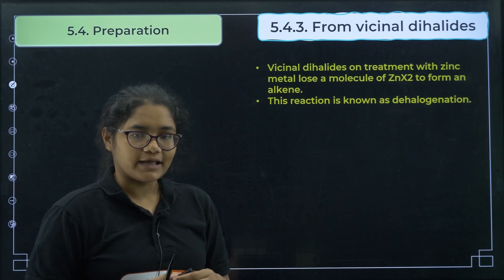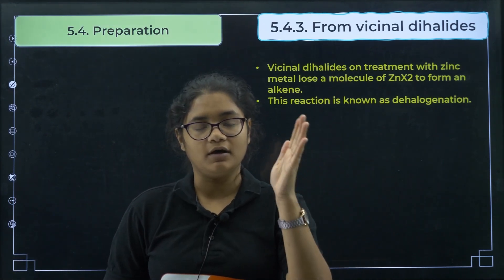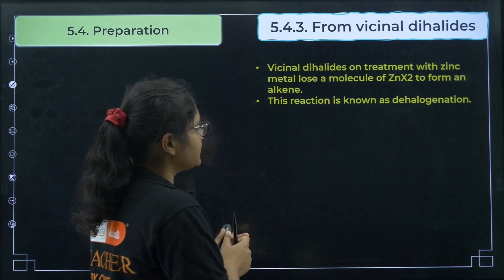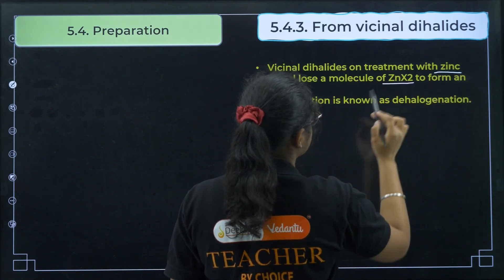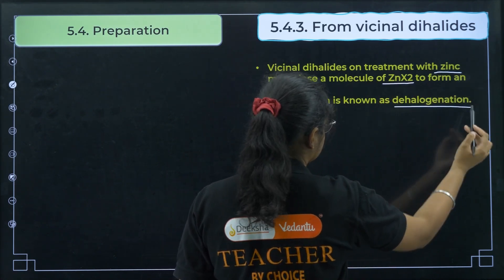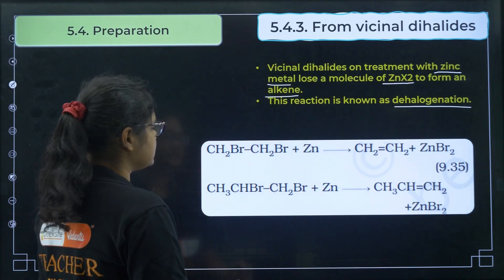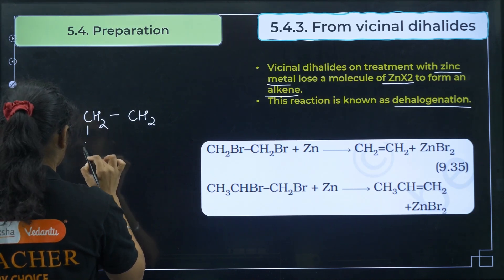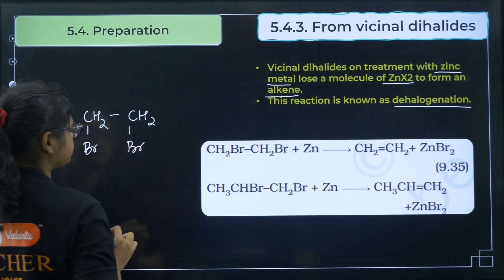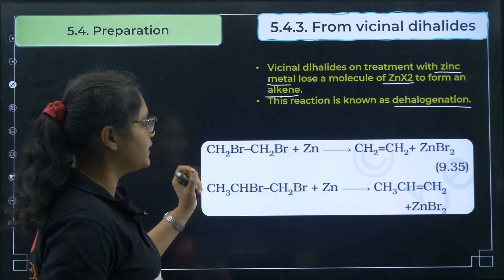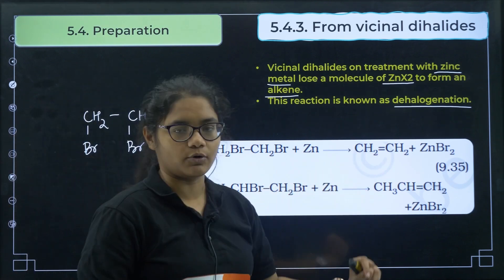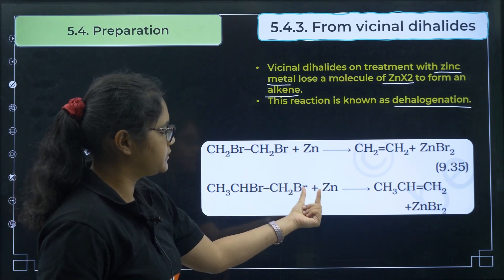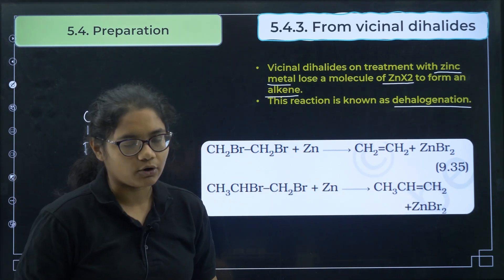Third method: from vicinal dihalides. Vicinal dihalides have halogens on adjacent carbons. On treatment with zinc metal, a molecule of ZnX2 is eliminated to form an alkene — this is known as dehalogenation. For example, CH2Br-CH2Br + Zn gives CH2=CH2 + ZnBr2. Similarly, CH3-CHBr-CH2Br + Zn gives a double bond between those carbons.